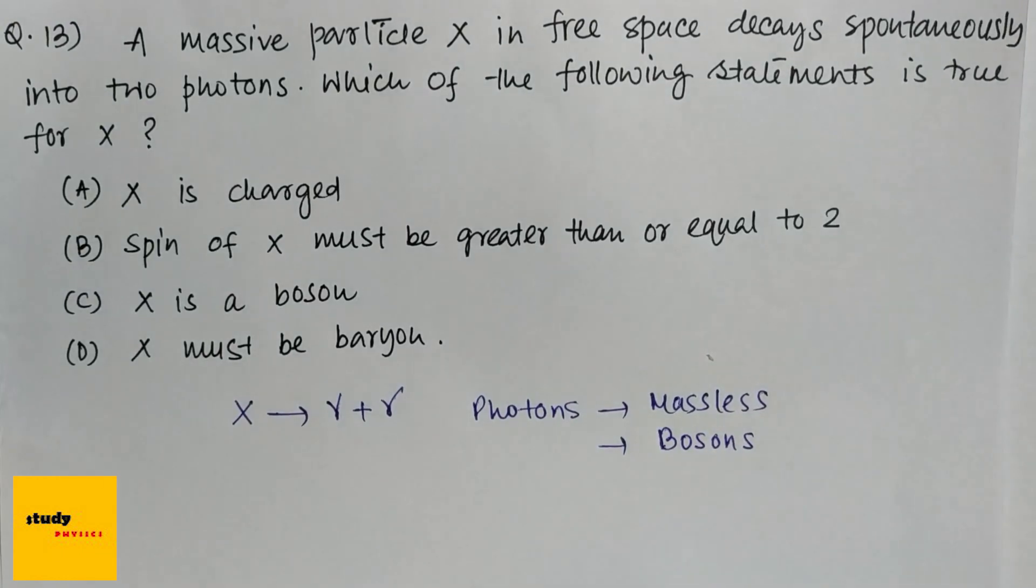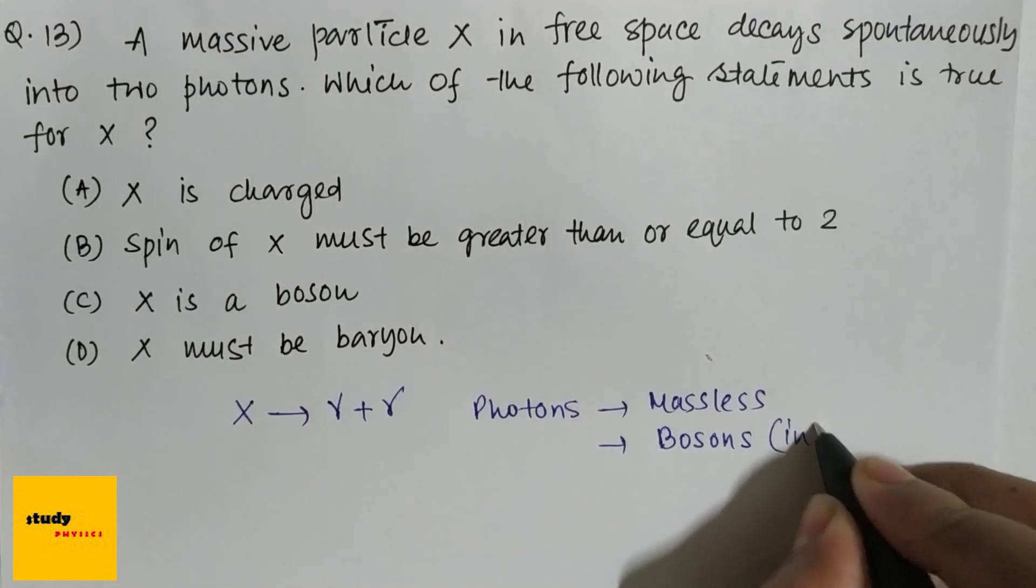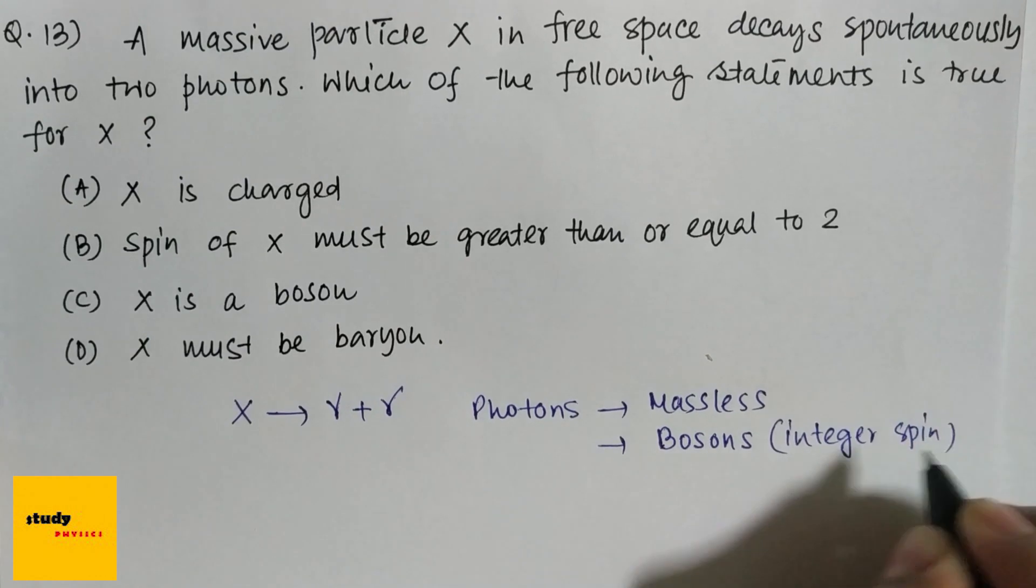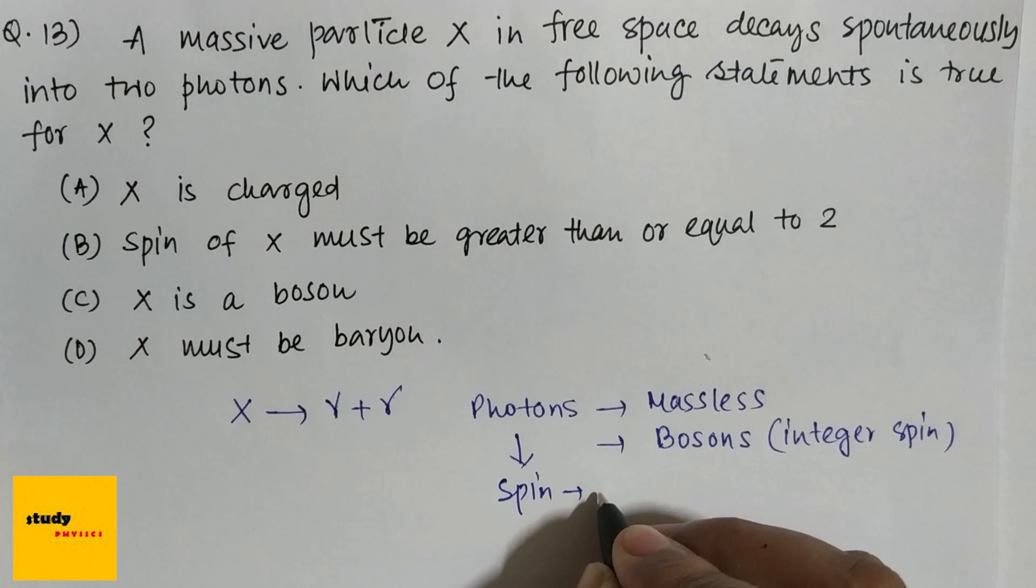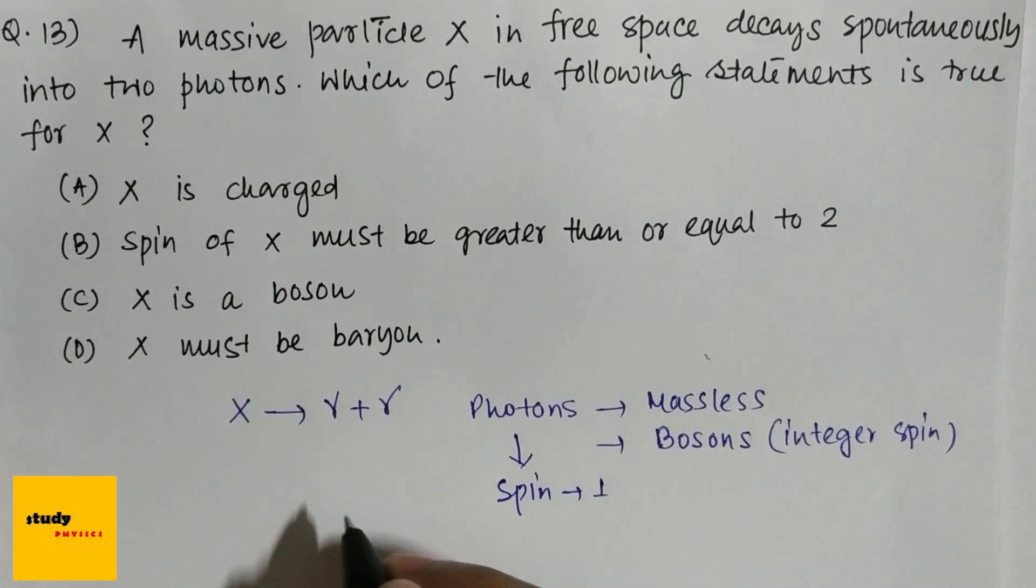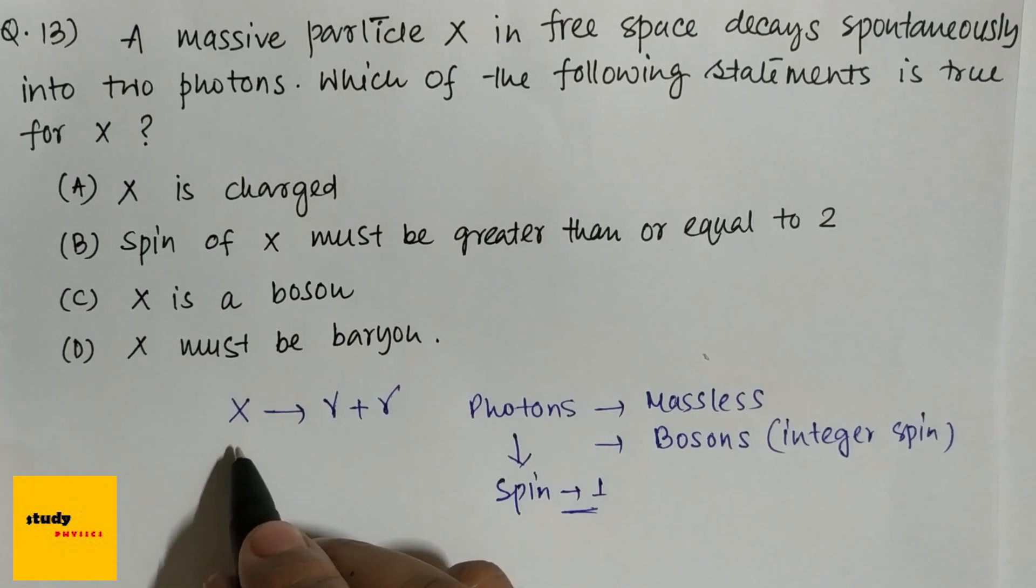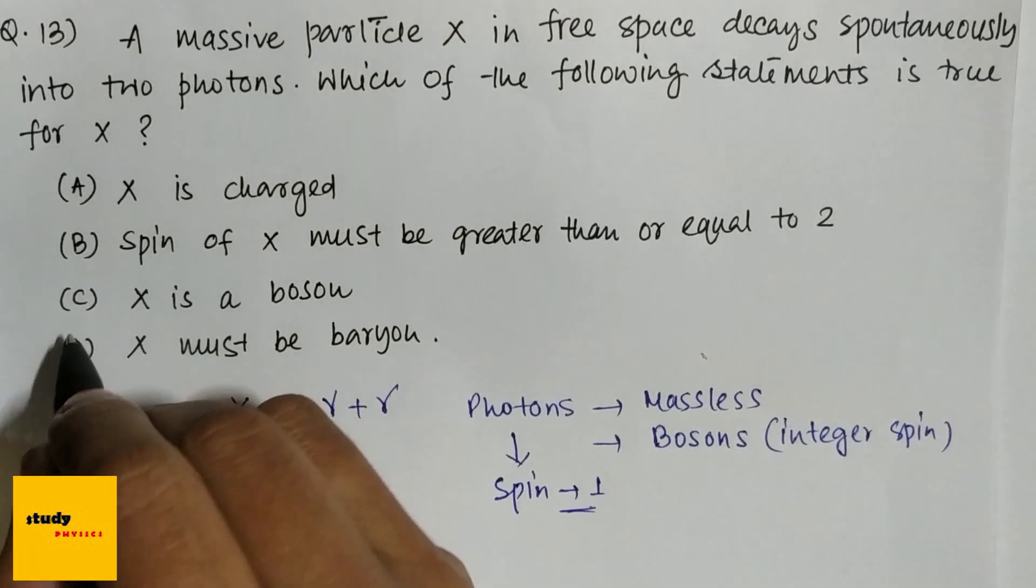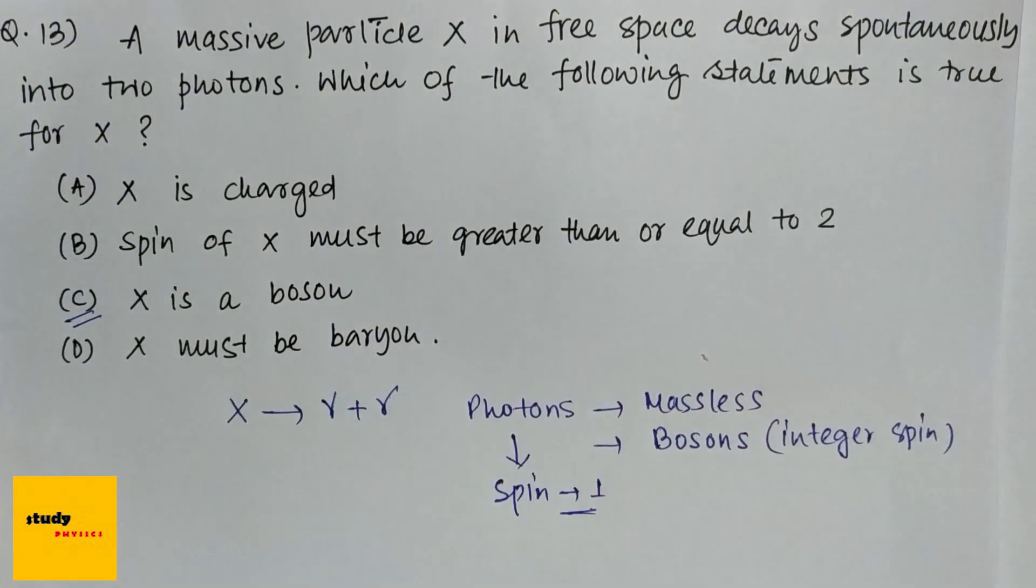And bosons have integer spin, and photon spin is one. So from this we can say that a boson particle decays into boson, so option C must be correct, that X is a boson.